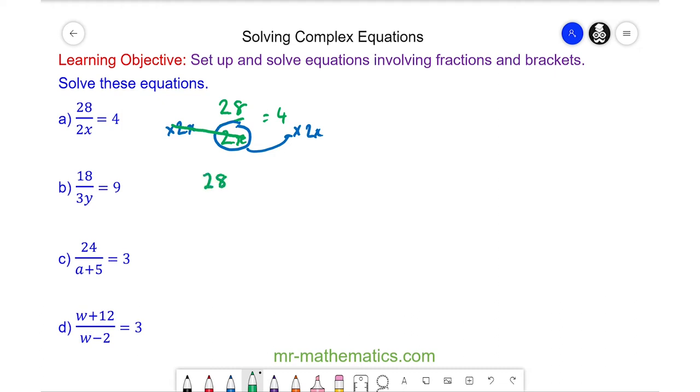So we have 1 lot of 28 is equal to 4 multiplied by 2x which is 8x, and now we can divide both sides by 8. 8 divided by 8 will cancel to make 1.